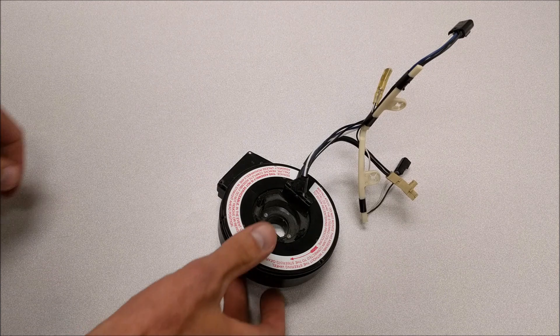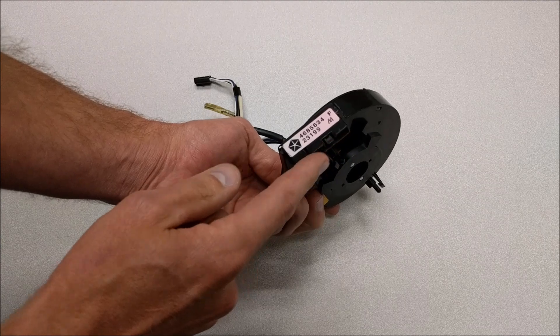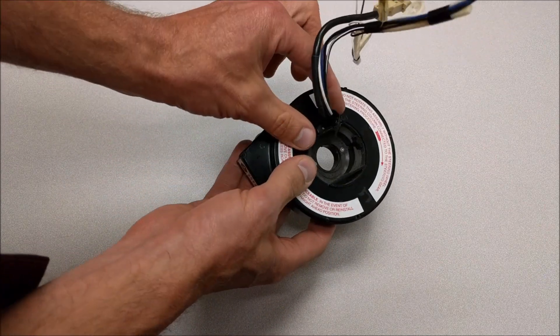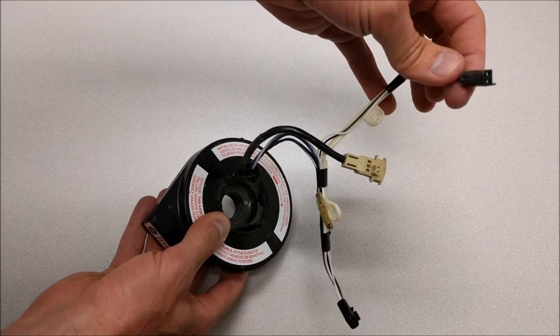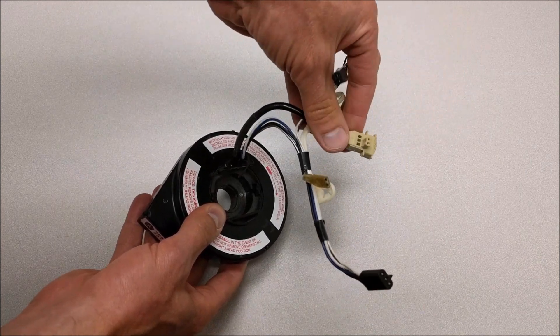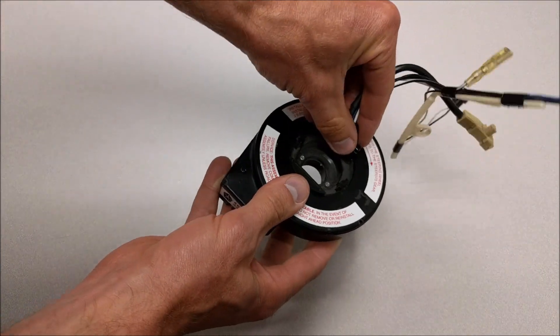So here's a clock spring that has been taken out of a vehicle. If you look at it you can see on the back are the connectors that connect to the vehicle. And on the front, out of the center part, you'll see the pigtail with the wires that come out that would connect to the horn, the airbag, the cruise control buttons, and so forth. And you can see how it can rotate.